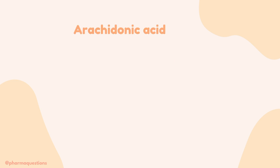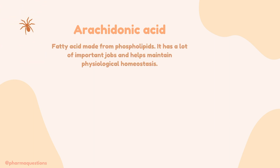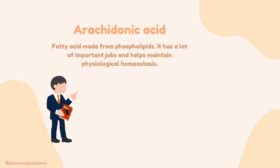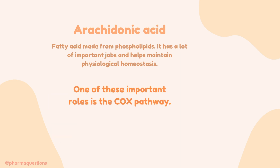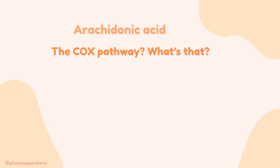Arachidonic acid is a fatty acid that's made from the membrane layers of phospholipids. It has a lot of important roles in maintaining physiological homeostasis, and one of these roles is in the COX pathway. And let's look at this in a bit more detail.